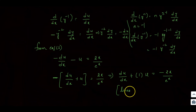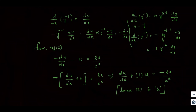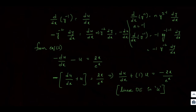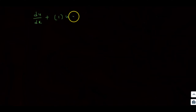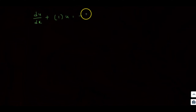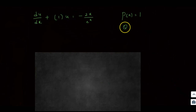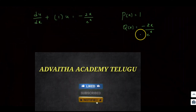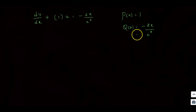This is a linear differential equation in u. Comparing with the standard form du/dx + P(x)·u = Q(x): P(x) = 1, and Q(x) = −2x/e^x.